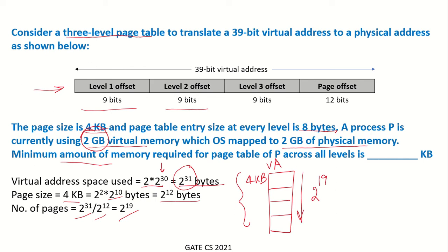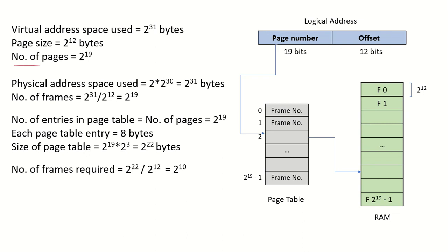As many pages as there are, that many entries have to be in the page table. So the number of pages is 2^19, and there will be one entry for each page number. If we had a simple page table, the logical address would have 19 bits for the page number and 12 bits for the offset. Why 12 bits? Because the page size is 4KB.